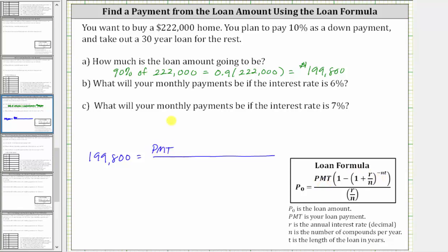Then in the numerator, we have the payment times the quantity one minus, and then in parentheses we have one plus R divided by N, where R is the annual interest rate as a decimal, and N is the number of compounds per year, which if not specifically given, we use the number of payments per year. So for part B, R is 6%, which as a decimal is 0.06. This is divided by N, because you're making monthly payments, N is 12.